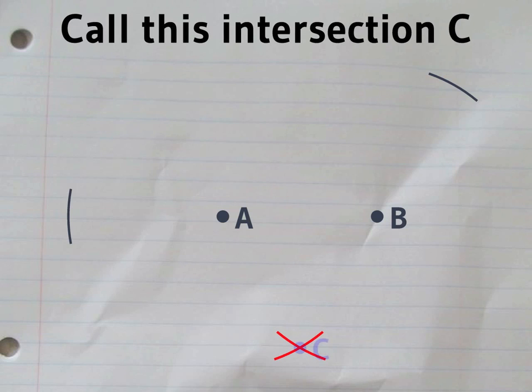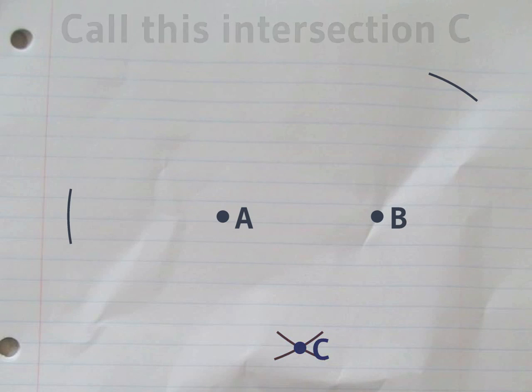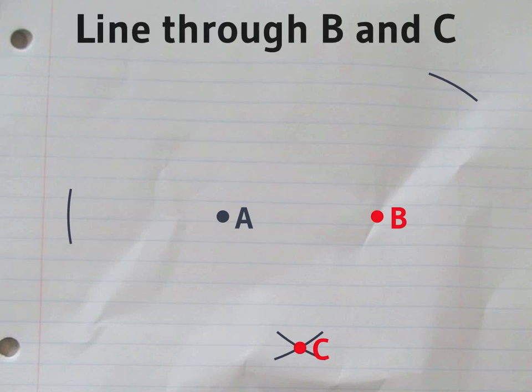We'll call this intersection C. Now, use the ruler to draw a straight line through B and C.